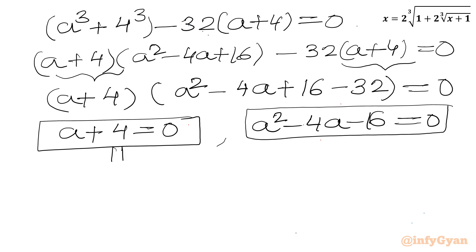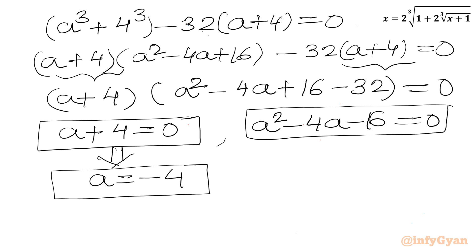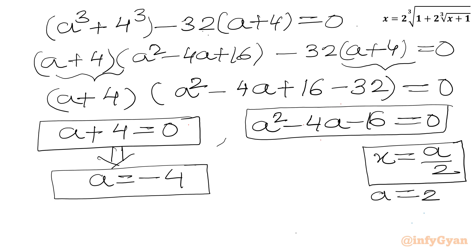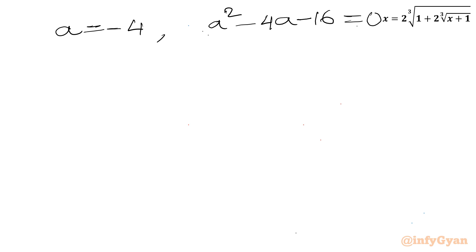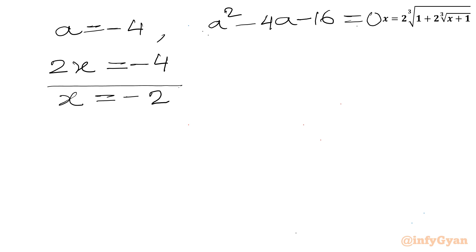So when a equal to negative 4 we will get one real solution for sure. Our substitution was x equal to a over 2, so a equal to 2x. Applying a equal to negative 4: 2x equal to negative 4, so x equal to negative 2. That is our first real solution.